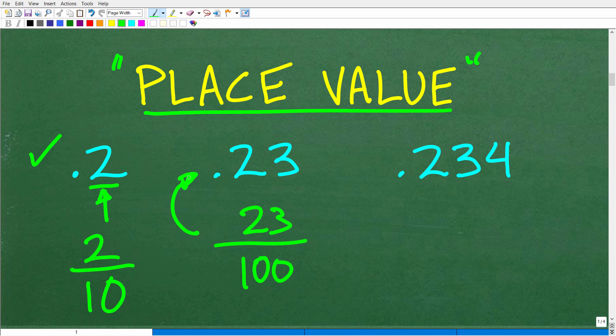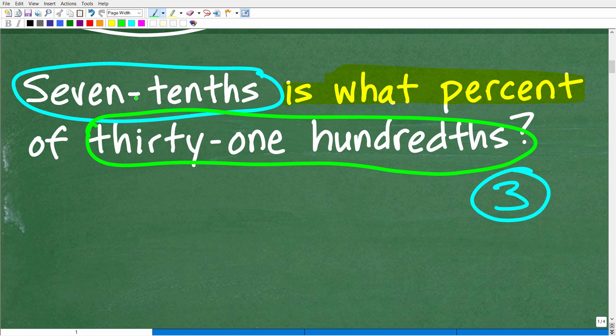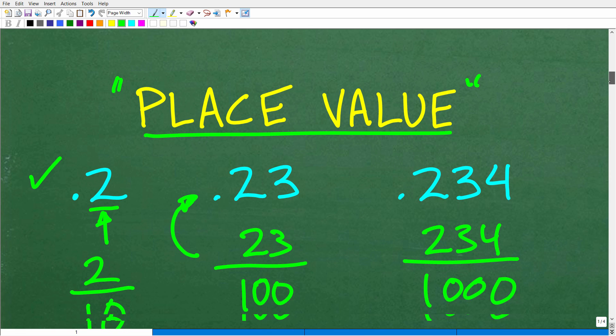All right, so hopefully you kind of understand what's going on here. Let's go ahead and do this last little example, 0.234. So if this is the tenths, this is the hundredths, what do you think this is going to be? If you said the thousandths place, you are an expert already in place value. So we can express this particular decimal not as 0.234, which of course it is, but 234 thousandths, 234 over 1,000.